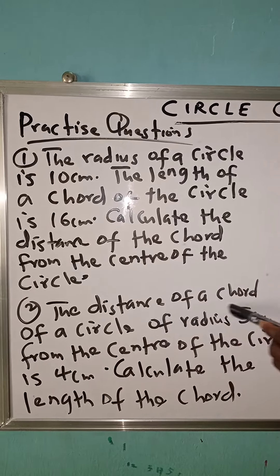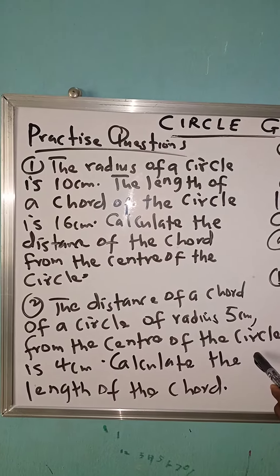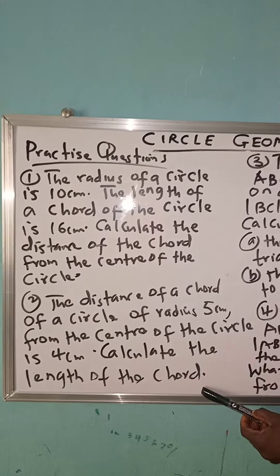Number 2. The distance of a chord of a circle of radius 5 cm from the center of the circle is 4 cm. Calculate the length of the chord.